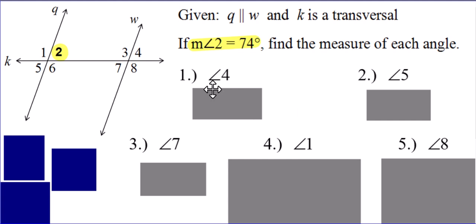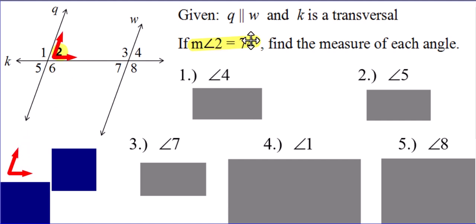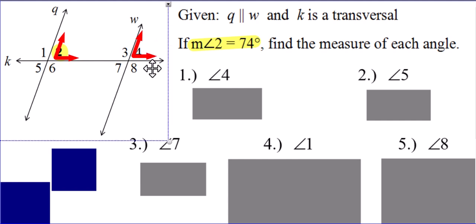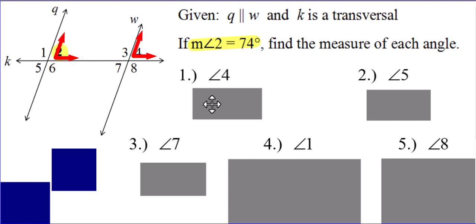Problem number one: how do I get the measure of angle four? I already know the measure of angle two is 74 degrees. Angle two and angle four are in matching positions — they're both in this top right-hand corner. Angle four is in the top right-hand corner for the right side of the picture, and angle two is in the top right-hand corner for the left side of the picture. Bottom line, they're corresponding angles, which means they have the same measure. Therefore, the measure of angle four is also 74 degrees, just like angle two was.